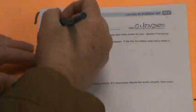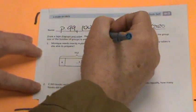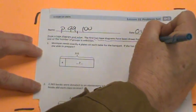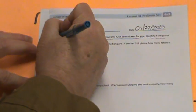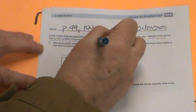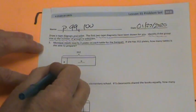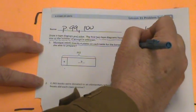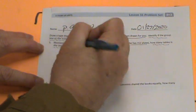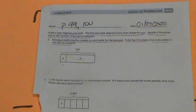See what we've got going here in problem one. It says draw a tape diagram and solve. The first two tape diagrams have been drawn for you. Monique needs exactly four plates on each table for the banquet. If she has 312 plates, how many tables is she able to prepare? Let's take a look.